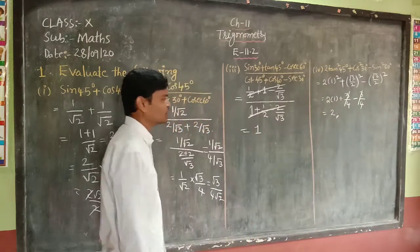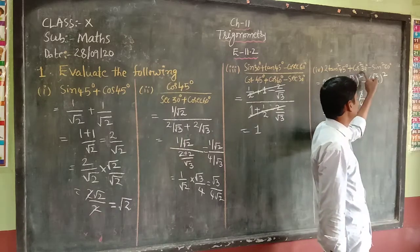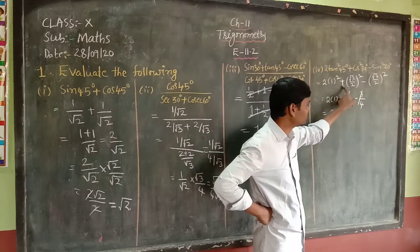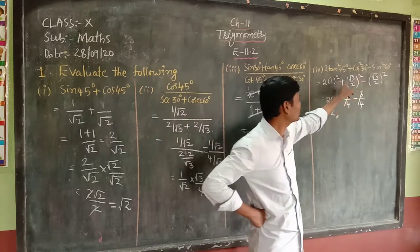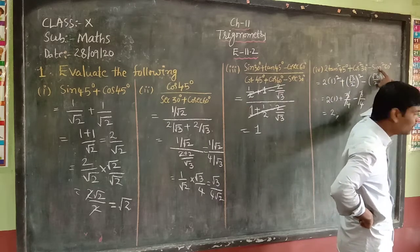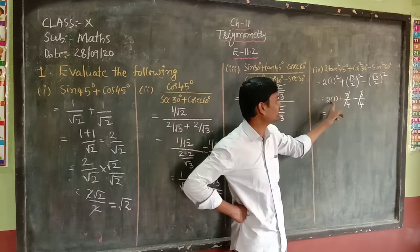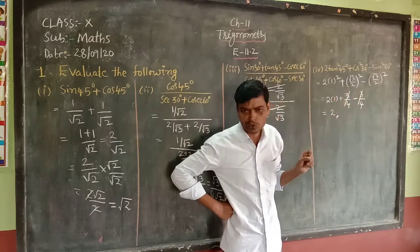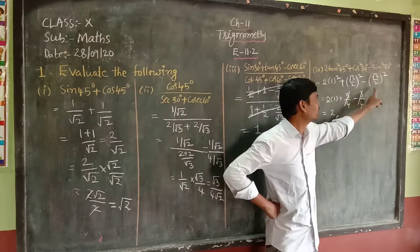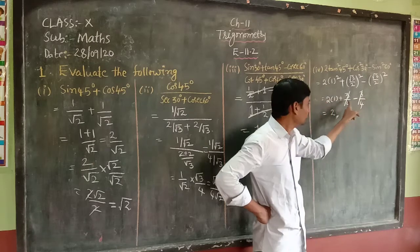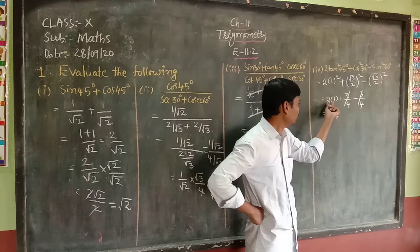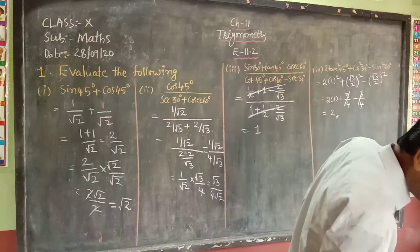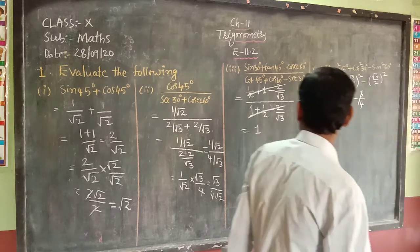Revision: 2 tan² 45° + cos² 30° − sin² 60°. Tan 45° = 1, so 2 × 1² = 2. Cos 30° = √3/2, so (√3/2)² = 3/4. Sin 60° = √3/2, so (√3/2)² = 3/4. The +3/4 and −3/4 cancel. Final answer is 2.